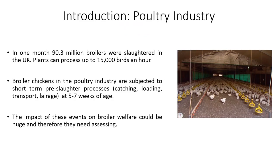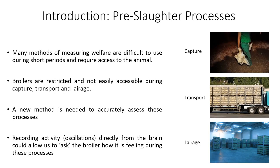Chicken is the second most popular meat consumed in the EU after pork, and a vast amount of broiler chickens are raised and slaughtered to satisfy this demand. At the end of a broiler chicken's life cycle, it is exposed to many short-term processes prior to slaughter. The primary pre-slaughter processes are capture, transport, lairage, and stunning.